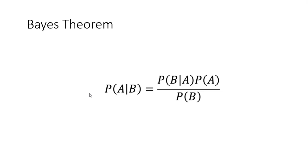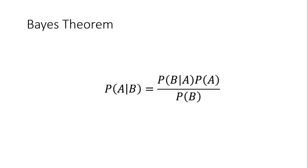Now the main thing comes to our mind — the formula or statement of Bayes' Theorem: P(A|B) equals P(B|A) times P(A) divided by P(B). Here, A and B are events. A is the first event and B is the second event. Whenever A and B are two events, P(B) — the probability of B — must not be equal to zero. That is a key condition before starting with the theorem.